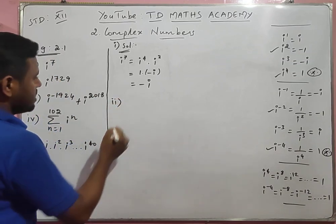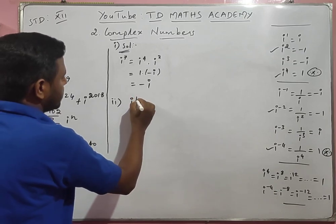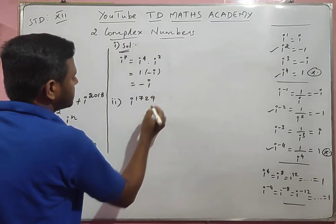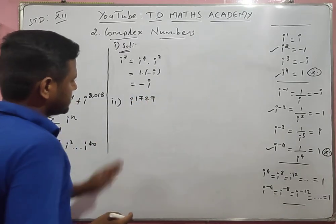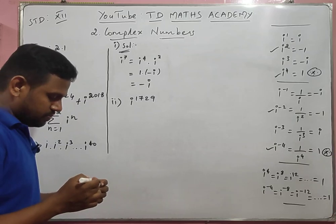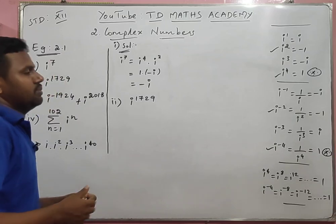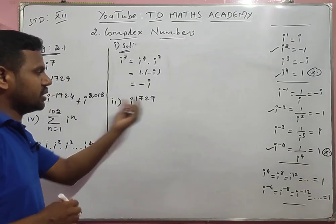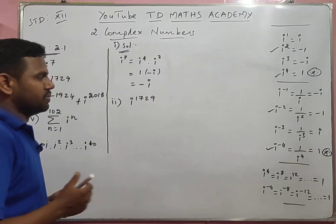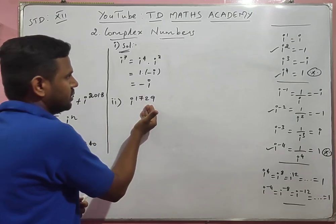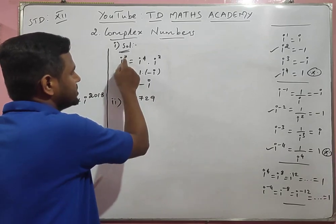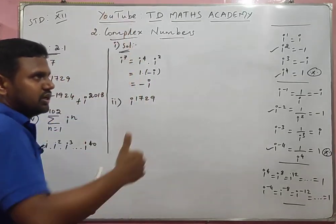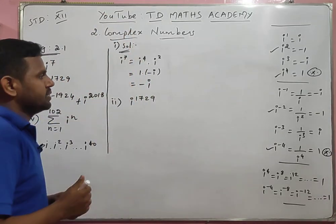Next, second sum: i power 1729. 1729 is a large number. To find the value, we look at the 4th table. For example, i power 8 equals i power 4 into i power 4, which equals 1.